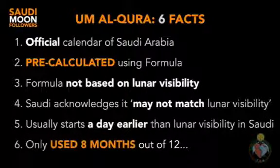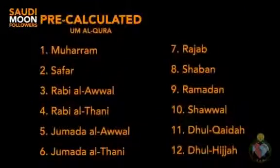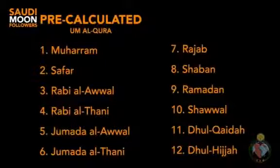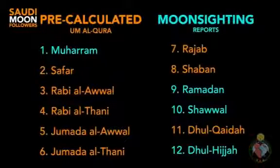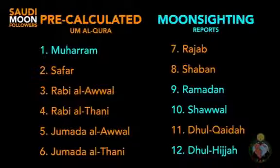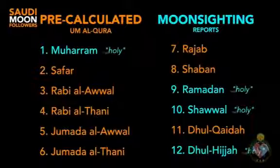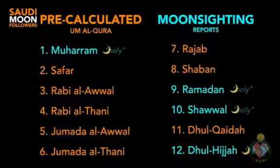In practice, the Umm al-Qurah calendar is only used in Saudi Arabia for eight months of the year. For the remaining four months, they switch from the Umm al-Qurah calendar and begin months based on local moon sighting reports instead. These four months are Ramadan, Shawwal, Dhul-Hijjah, and Muharram. This is because Saudi Arabia considers these months as holy and believes that the holy months must start with a physical moon sighting.